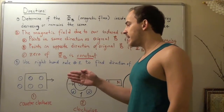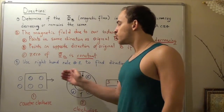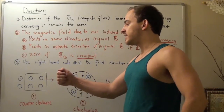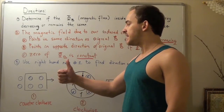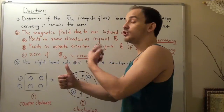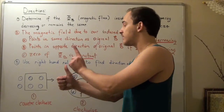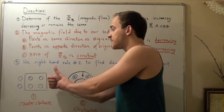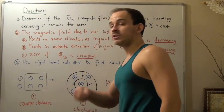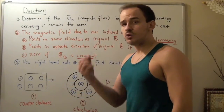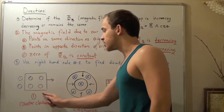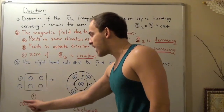Since the flux is decreasing, we choose option A from step two: the magnetic field due to our induced current points in the same direction as the original field. Since the original field points outward, our induced magnetic field also points outward. Using the right-hand rule, I grip the wire so my thumb points in the direction of the induced current — and the current travels counterclockwise.